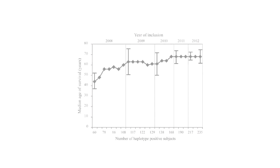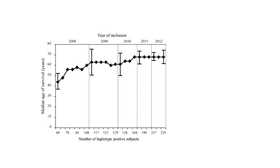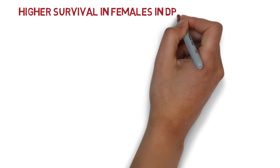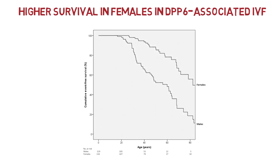This trend is also seen in Figure 1b, which shows the increase in the median age of survival over time due to greater inclusion of haplotype-positive subjects. Although the gender distribution between the original and extended cohorts did not differ significantly, the survival curves for males and females were significantly different, with higher survival in female individuals, as seen in Figure 1c.